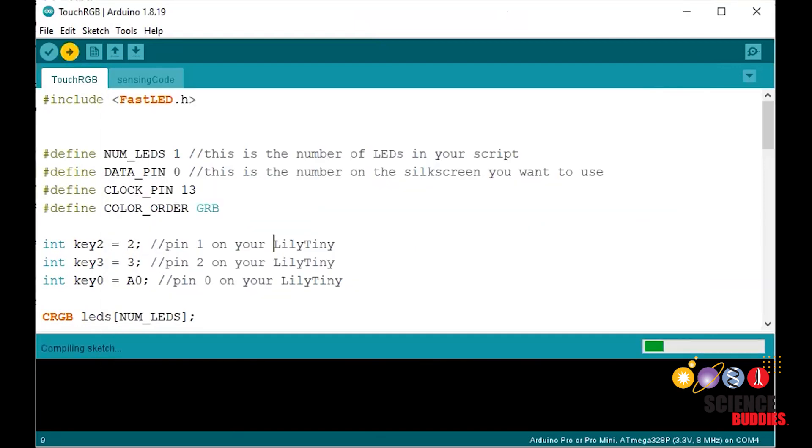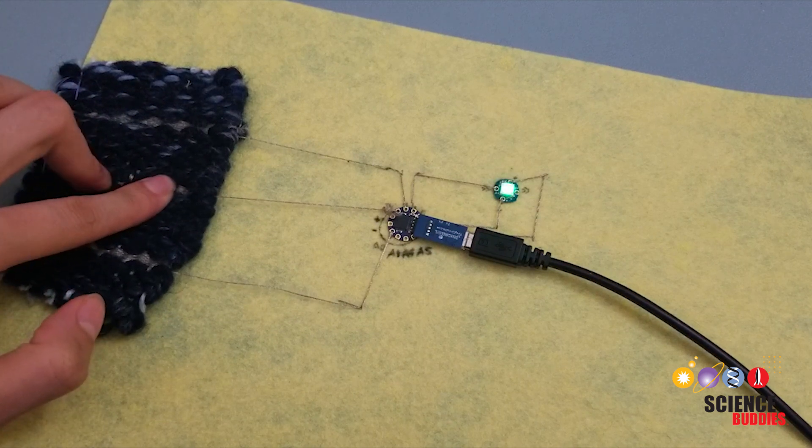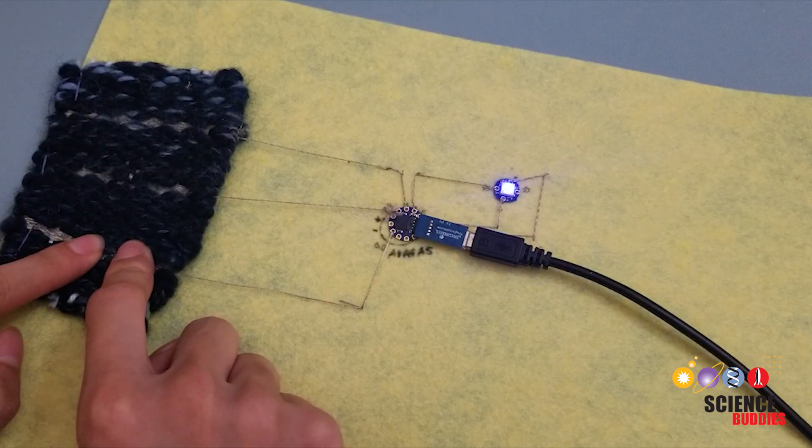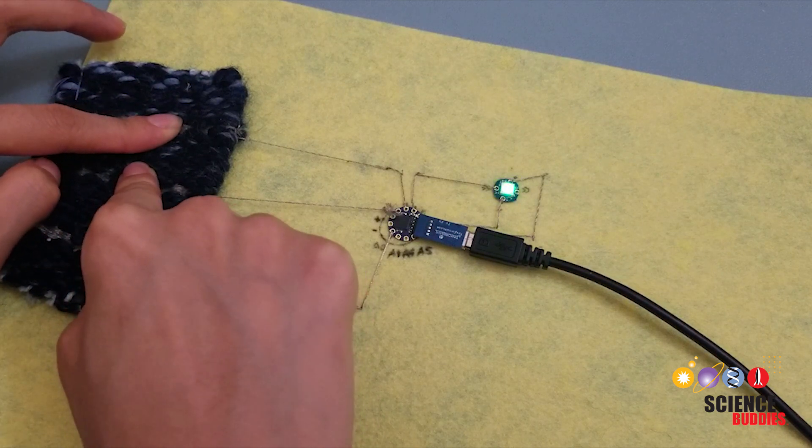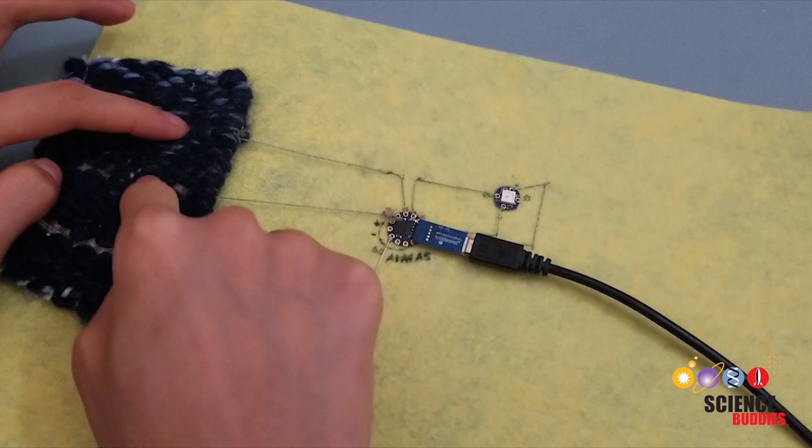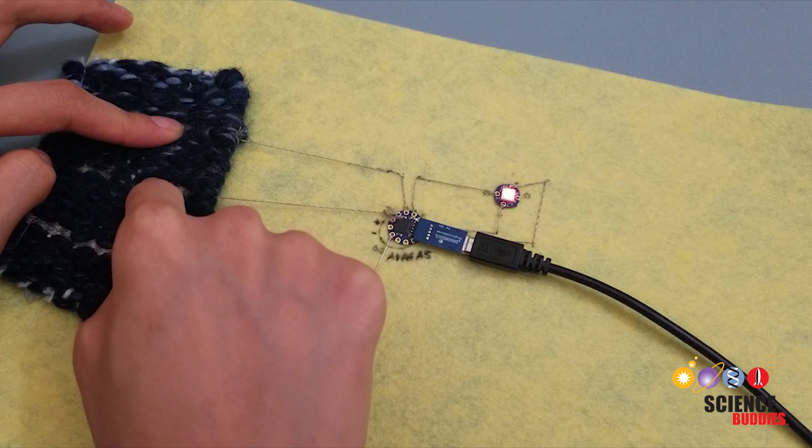Now, upload the code onto your Tiny Lily mini processor. Once your Arduino code has been successfully uploaded onto your Tiny Lily, you should see the LED light up in different colors corresponding to the different sensor patches. Each section of woven conductive thread is a different sensor patch.